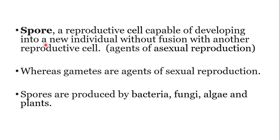Spores are reproductive cells capable of developing into a new cell but without sexual reproduction — they do not undergo any fusion with another reproductive cell to produce a new individual. So spores are agents of asexual reproduction, whereas gametes are agents of sexual reproduction. Spores can be produced by bacteria, fungi, algae, and plants. When bacterial species produce spores, they are known as bacterial spores.